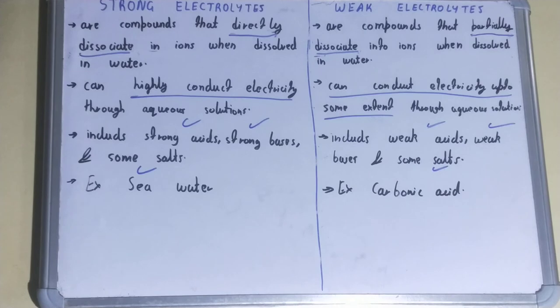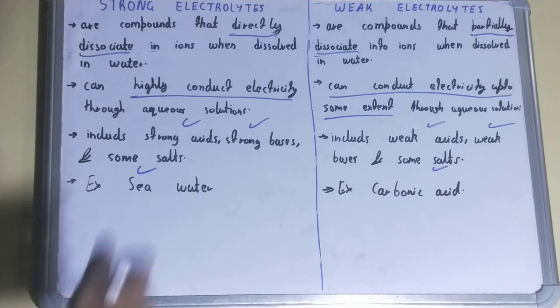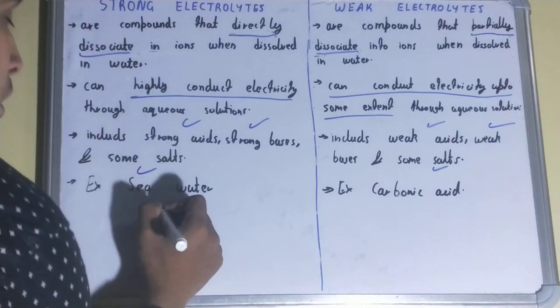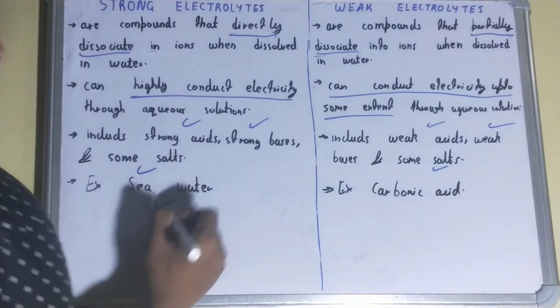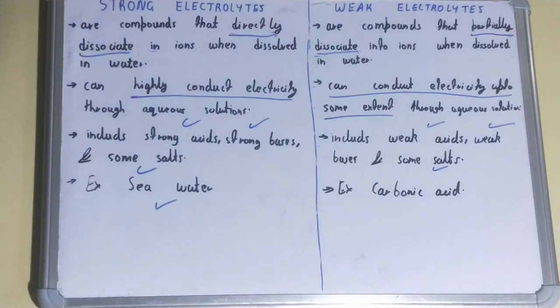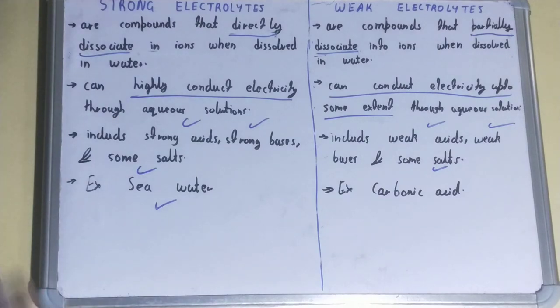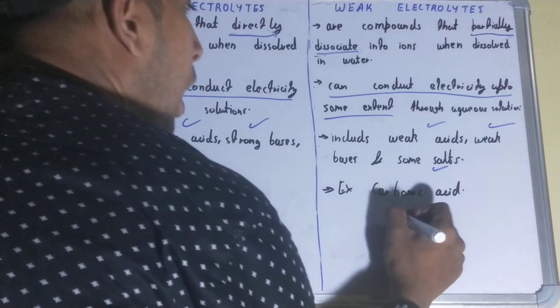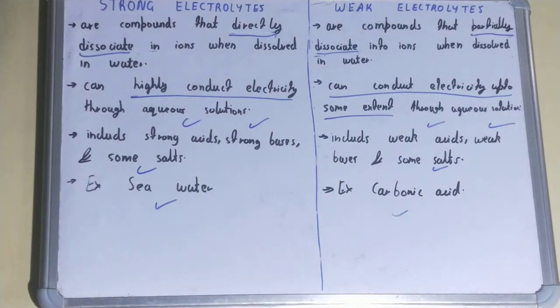For examples: strong electrolytes — the best example is seawater, which can highly conduct electricity. For weak electrolytes, carbonic acid is a good example. So this was all about the difference between strong electrolyte and weak electrolyte.